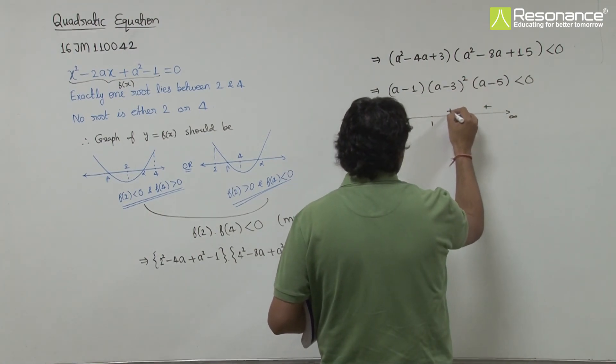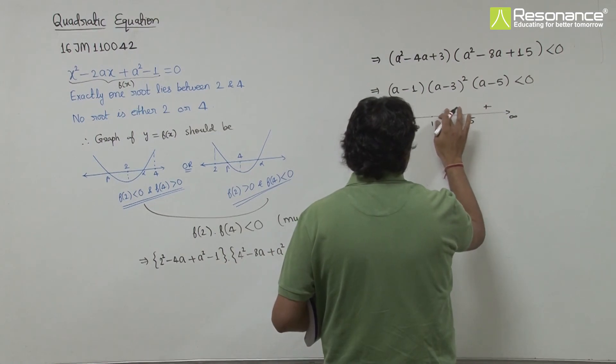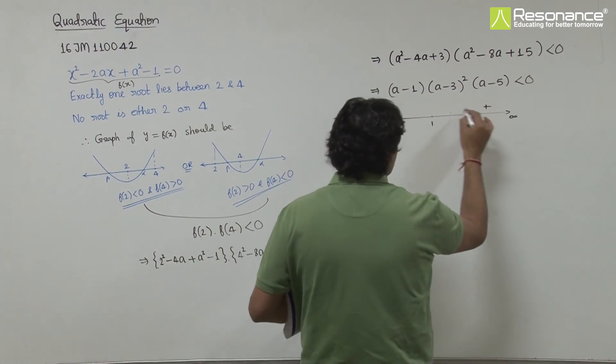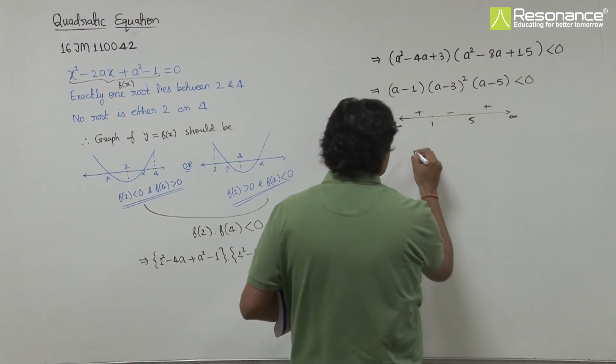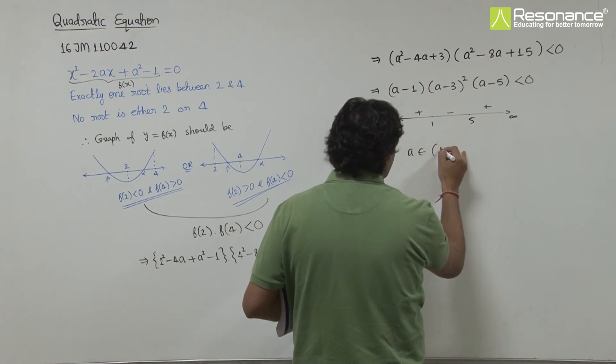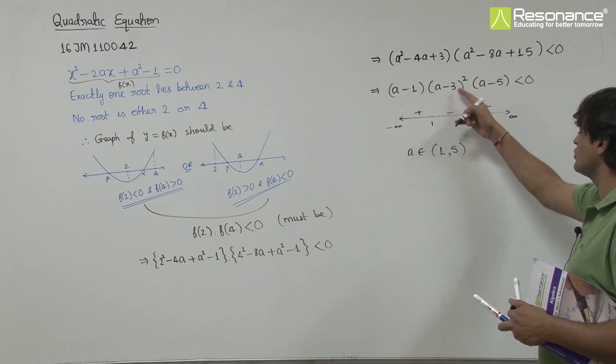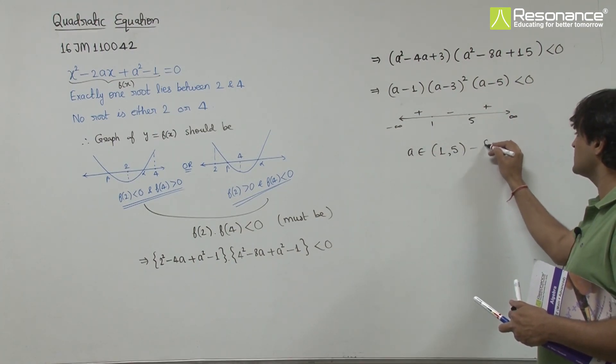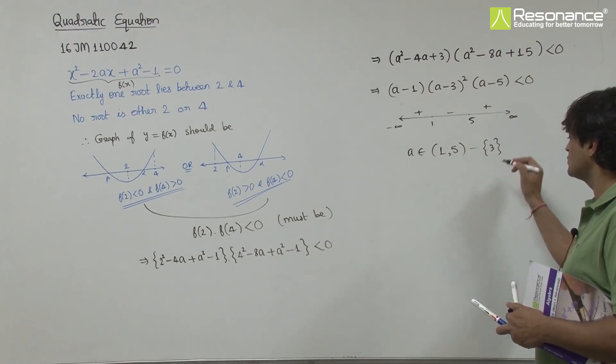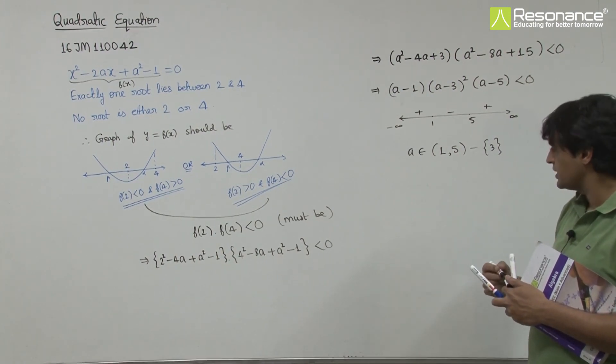Since (a - 3) is squared, the sign won't change at 3. We get plus, minus, plus on the number line. So a belongs to (1, 5). But since the inequality is strict, we exclude a = 3 where it equals zero. The answer is a ∈ (1, 5) except 3.